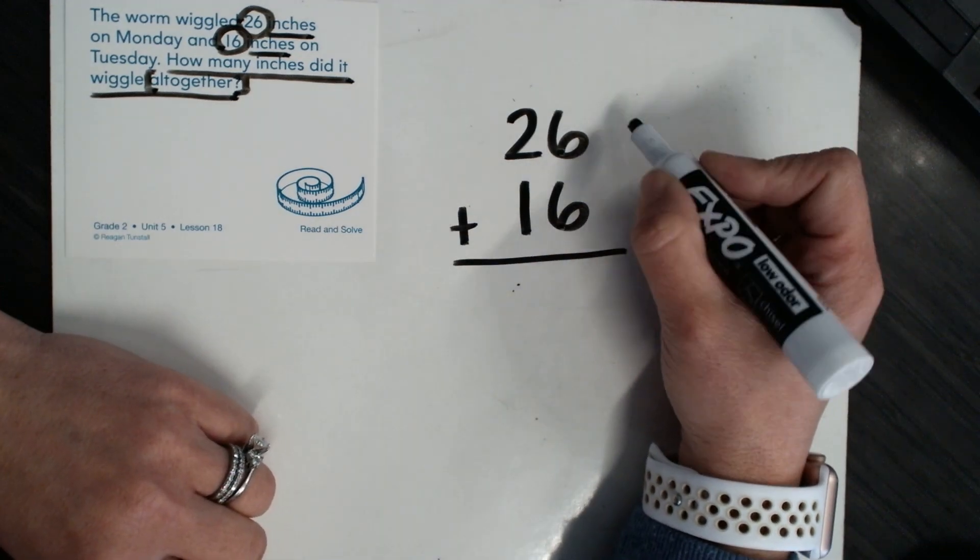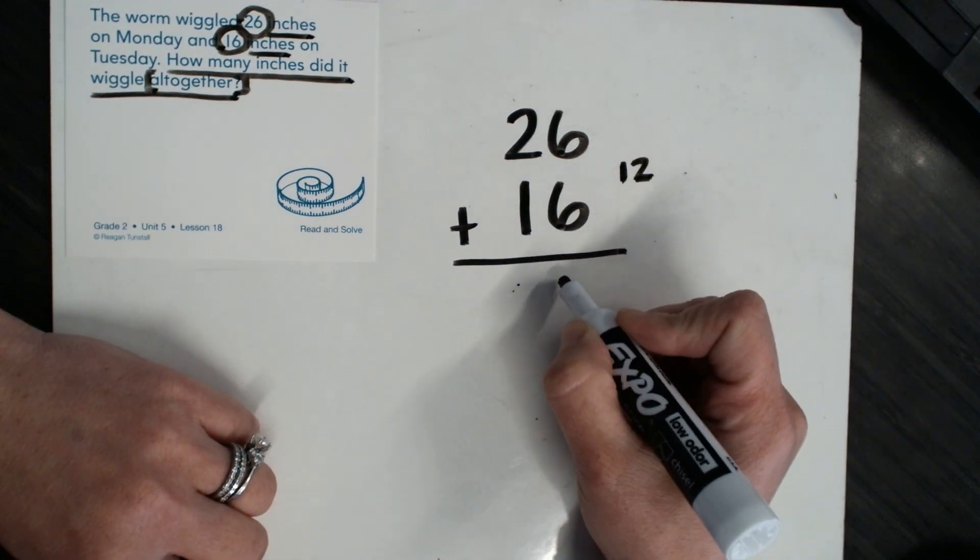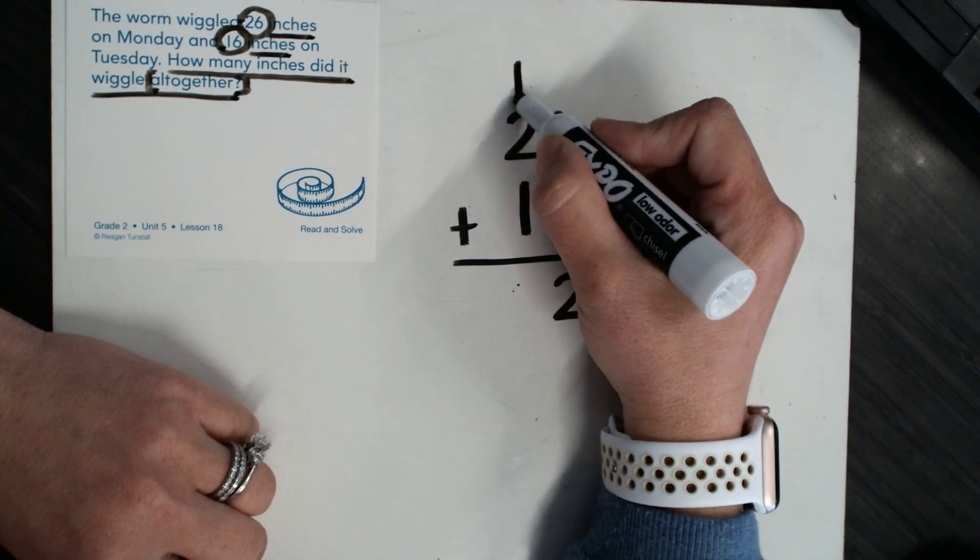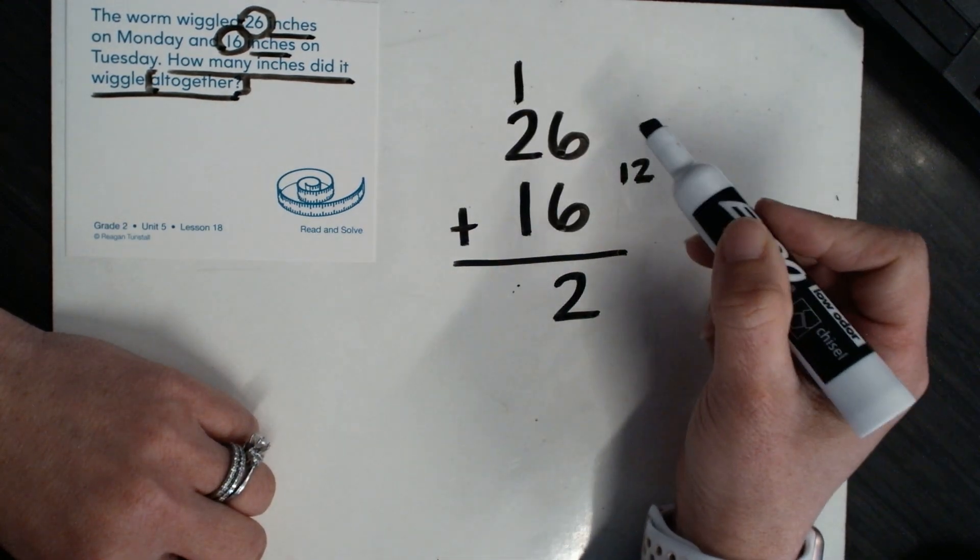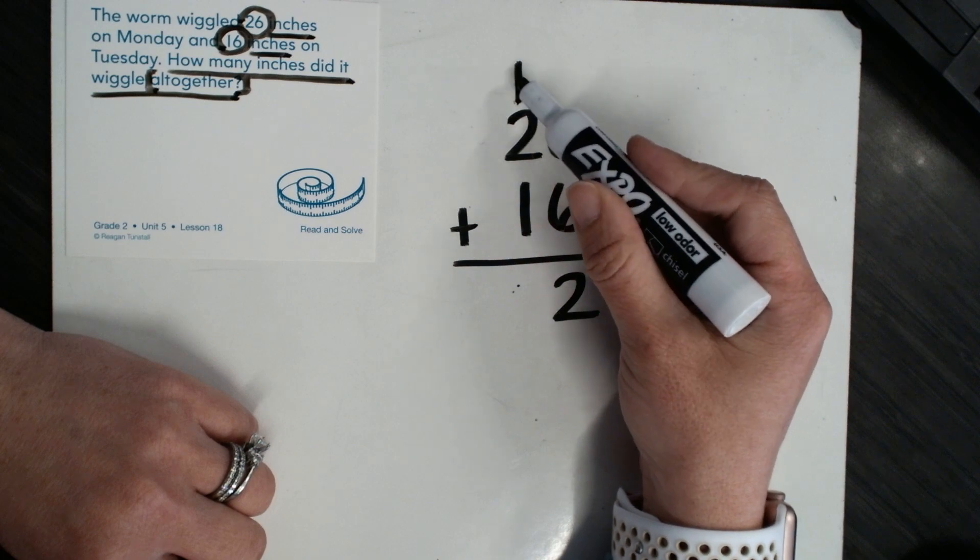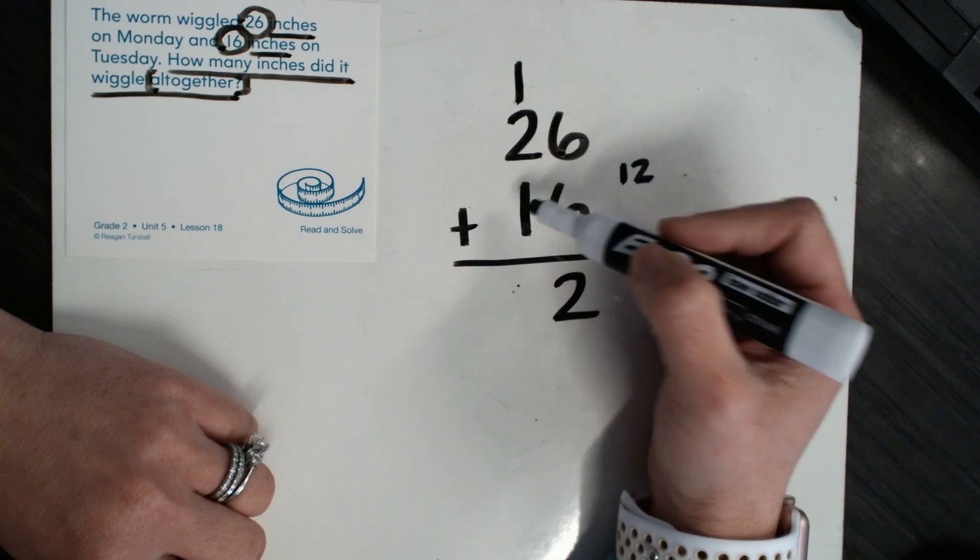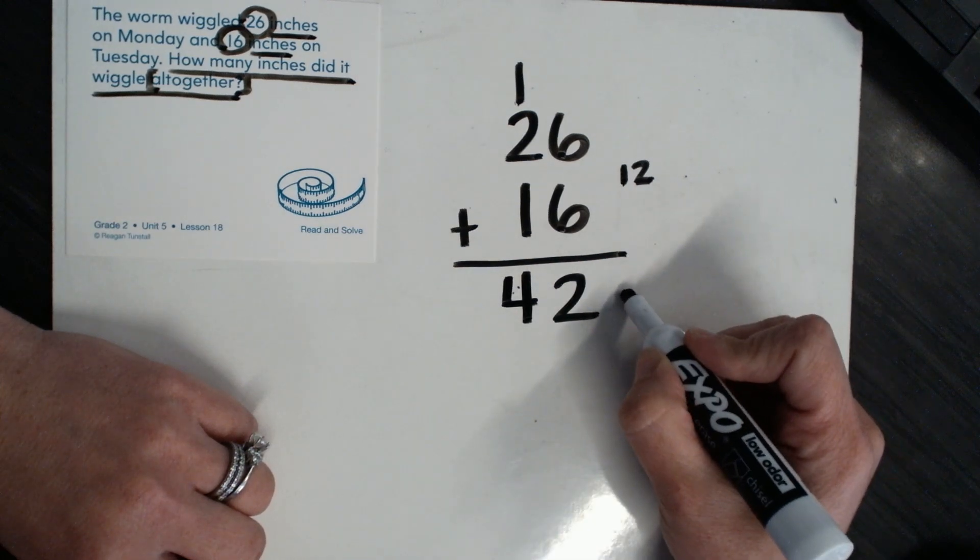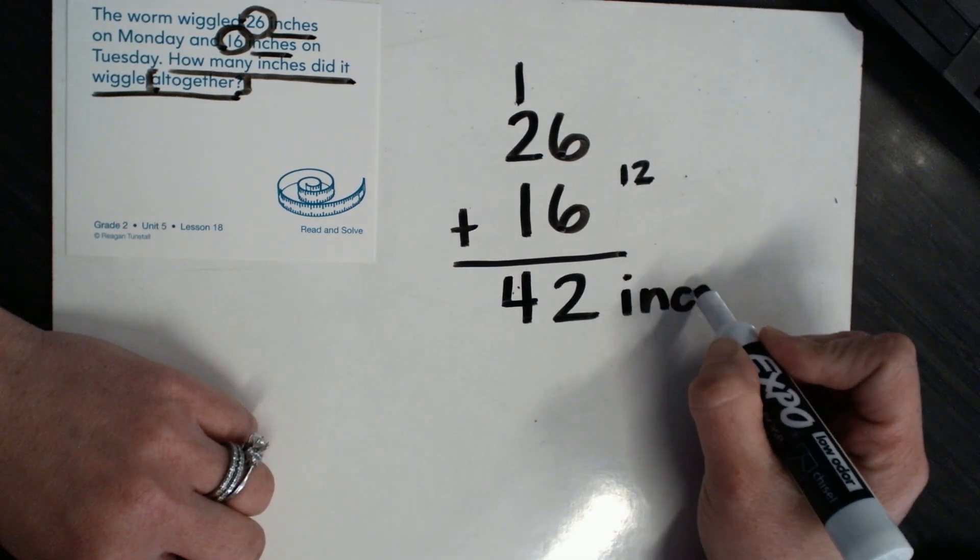Let's add our ones first, and I get 12. I'm going to put that two in the ones place and the one next door in the tens place, and now I need to add two plus one is three, plus one more makes four. So the worm wiggled 42 inches.